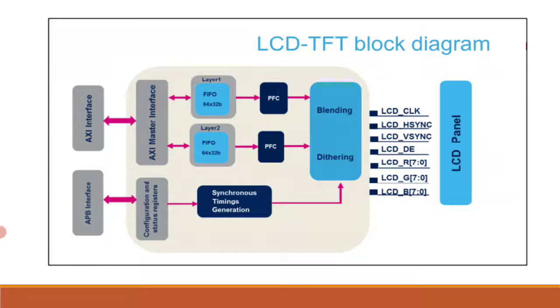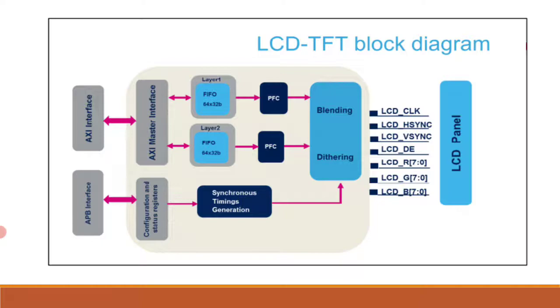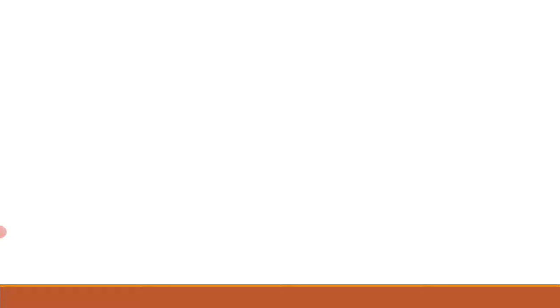There are three clock domains: the AXI clock domain, the APB peripheral clock (PCLK), and the pixel clock domain, which is the LCD_CLK. We need to understand the programmable timings after knowing about these clocks.